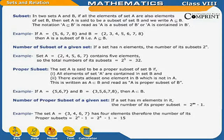Number of subsets of a given set: if a set has n elements, the number of its subsets is 2 raised to the power n. For example, set A = {2, 4, 5, 6, 7} contains 5 elements, so the total number of its subsets is 2⁵ = 32.